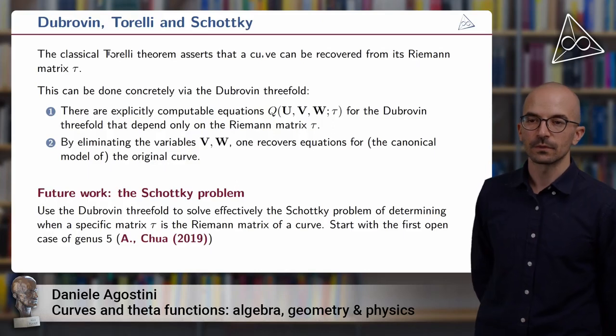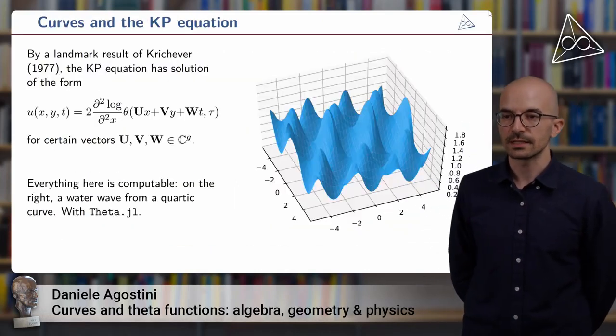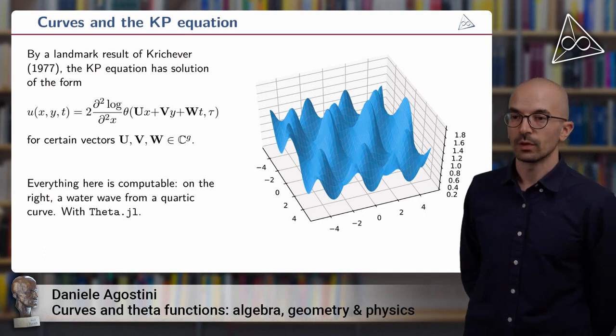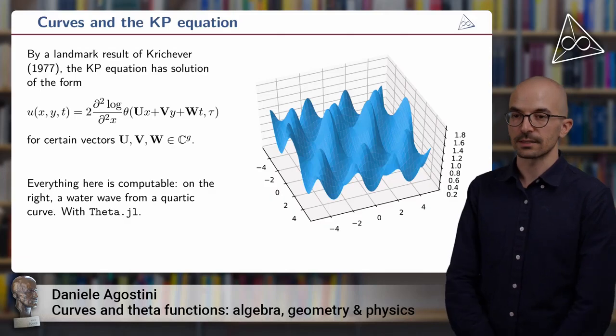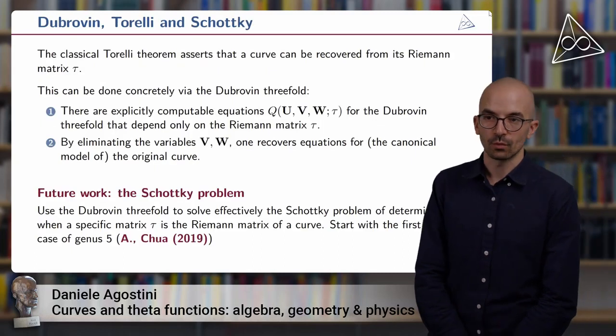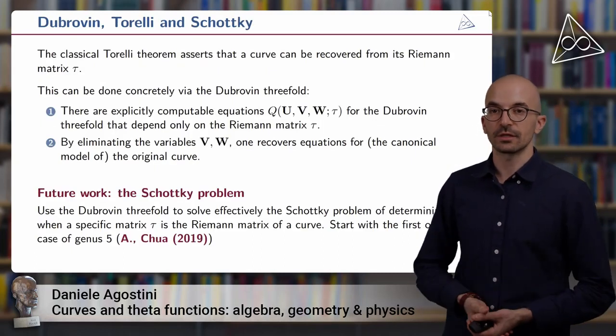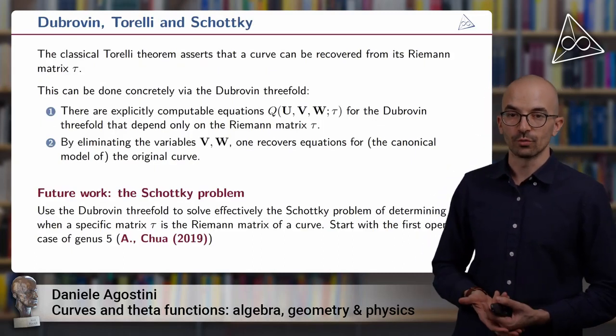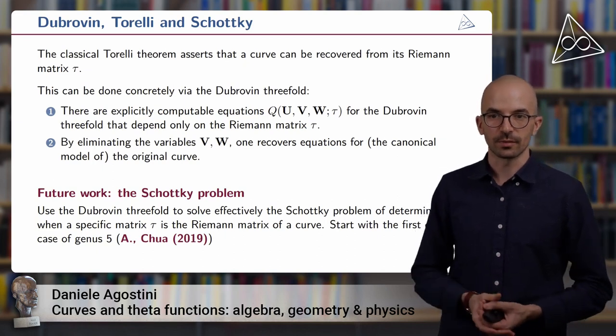Well, what's the idea? One idea is that if you plug in such a function into the KP equation and you ask that it is a solution, then you will get some conditions on u, v, and w that depend just on the matrix tau. In other words, we have explicitly computable equations for the Dubrovin threefold that depend just on the Riemann matrix tau.